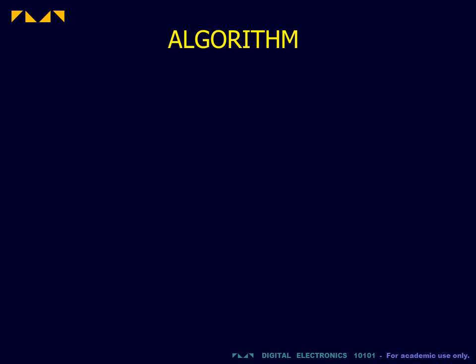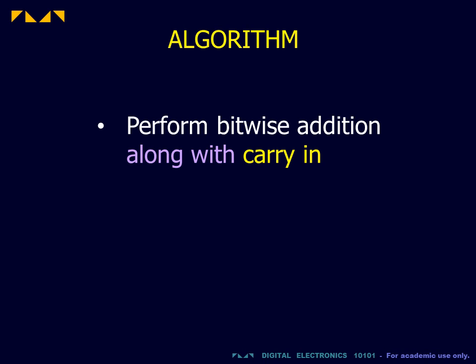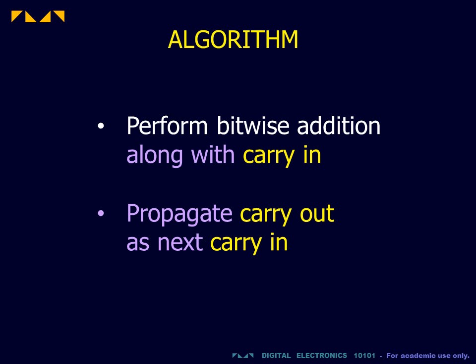The modified algorithm for binary addition is thus as follows. First, we must once more perform bitwise addition, but along with the carry in. Second, the carry out must now be propagated as the next carry in.